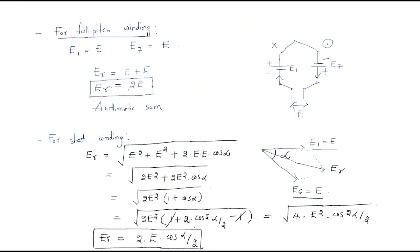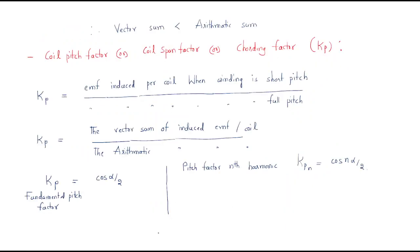The arithmetic sum is 2e, but the vector sum for short pitch winding is 2e·cos(α/2). Since the cos(α/2) factor is present, the magnitude is decreased. Therefore, the vector sum is less than the arithmetic sum — meaning the EMF generated in the short pitch winding is less than the EMF generated in the full pitch winding.